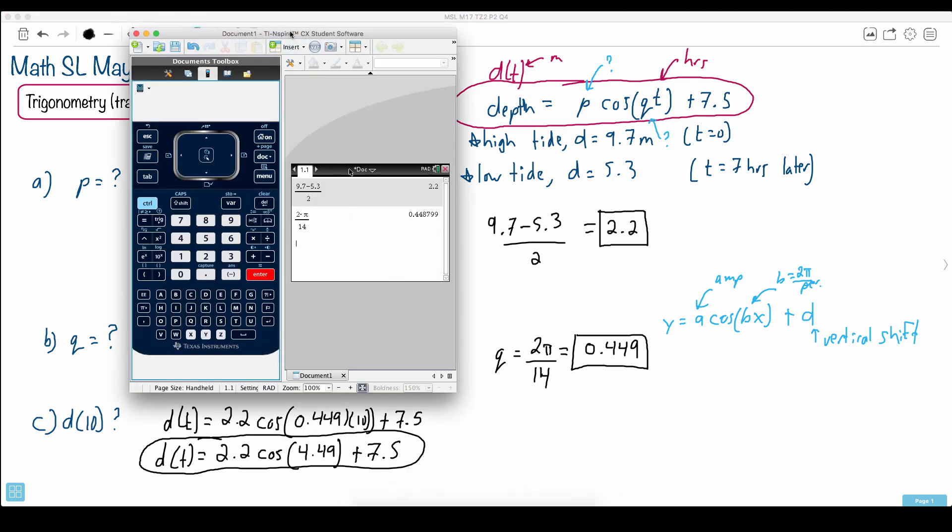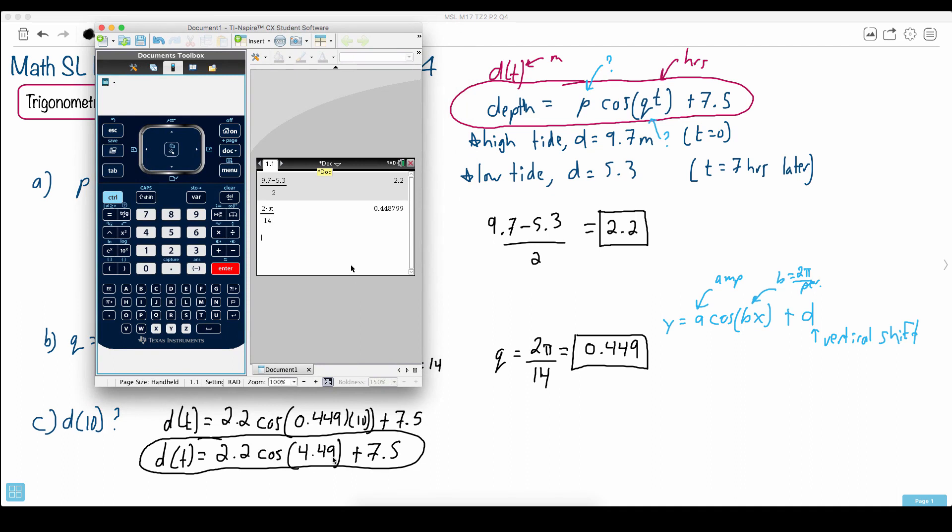Now, it helps to remember, though, you need to be in radian mode, because we were talking about 2 pi over something here, so we've got to be in radian mode. And double-check you're in radian mode, see I am up here, so that's fine. If you're not, you can always press a little gear here, and you can actually change the settings.